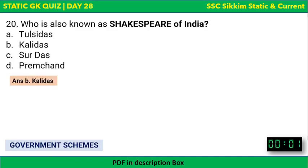The last question: who is also known as the Shakespeare of India? Options: Tulsidas, Kalidas, Surdas, or Premchand. The Shakespeare of India is Kalidas — a 5th-century poet.